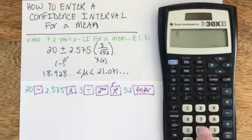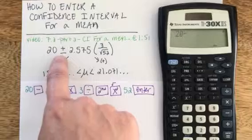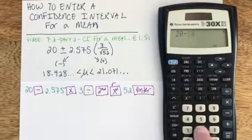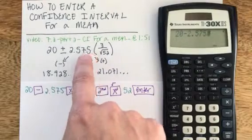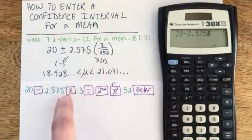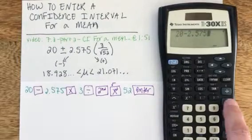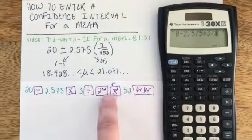So I start off with a cleared calculator, 20 minus, because from the plus or minus I'm doing the lower end first, 2.575. Now in my videos and handwritten lectures, I often put a parenthesis for clarity's sake, but I don't need to. I can just go ahead and hit times 3, and now I'm ready to divide by the square root.